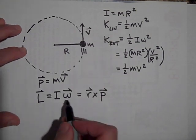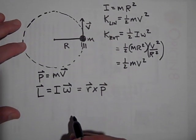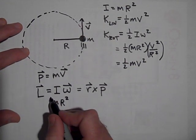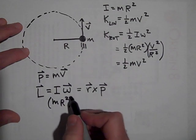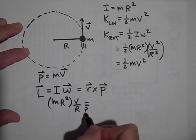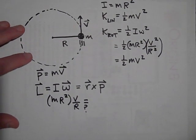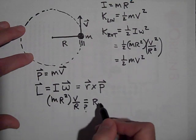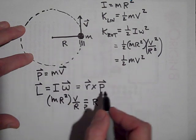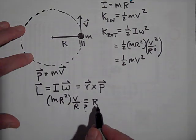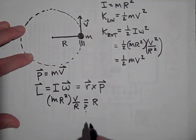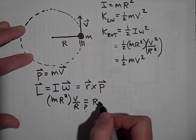And so let me show you how these are the same. Let's see. I is mr squared. And this omega is v over r. Does that equal, this is a question, does that equal r? Now, do you see how all of the momentum is perpendicular to r? So when I do r cross p, it's actually the same thing as just r times p because all of the momentum is perpendicular to r. So that's going to be r times mv.